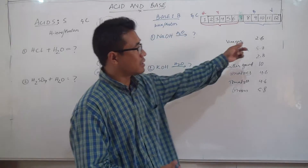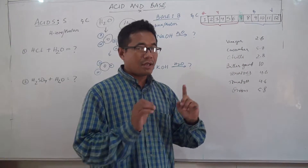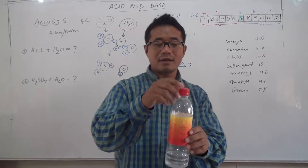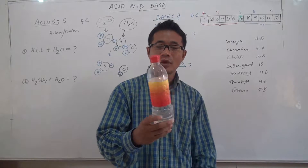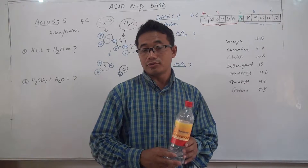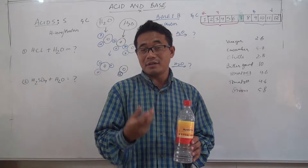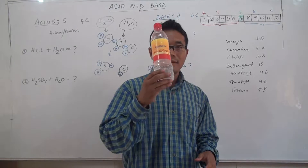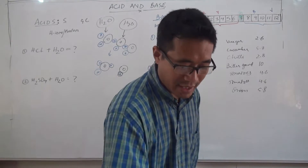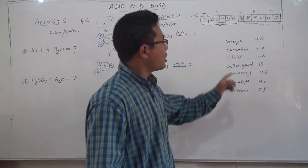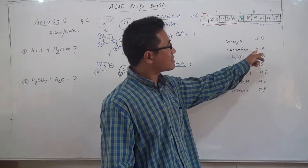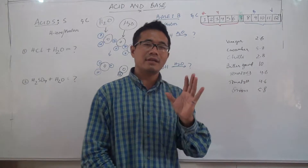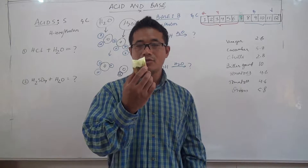Some of the materials we have here: vinegar has a pH of 2.6. The lesser the pH value, the more acidic they are. So vinegar is an acid — we use it in food; if you want to cook meat and make it soft, you put vinegar to break it up. pH 2.6 is very acidic. Cucumbers have a pH of 5.7 — acidic but very light in acid, a good food.